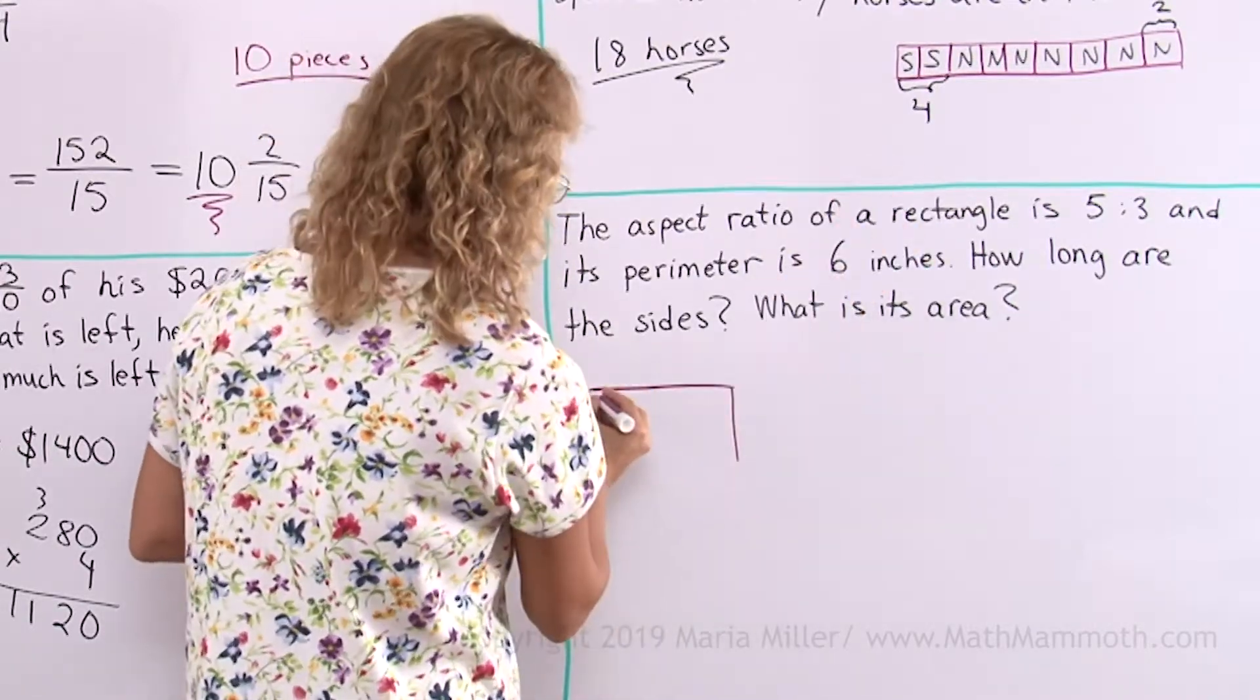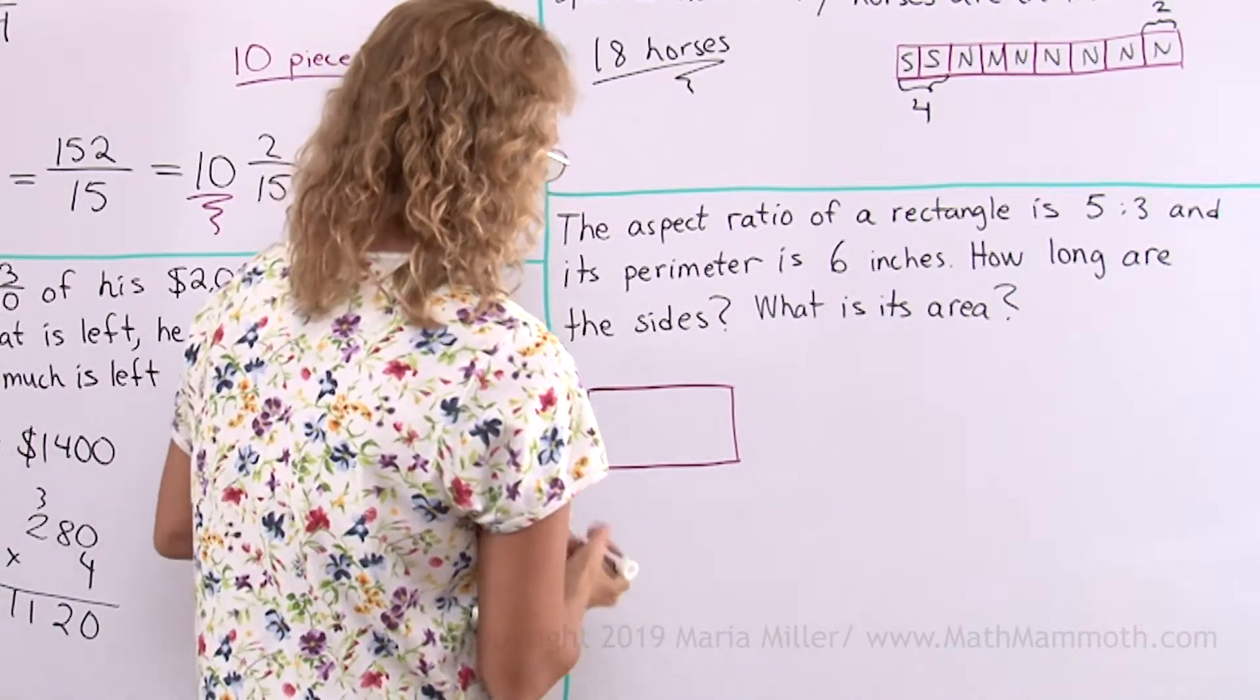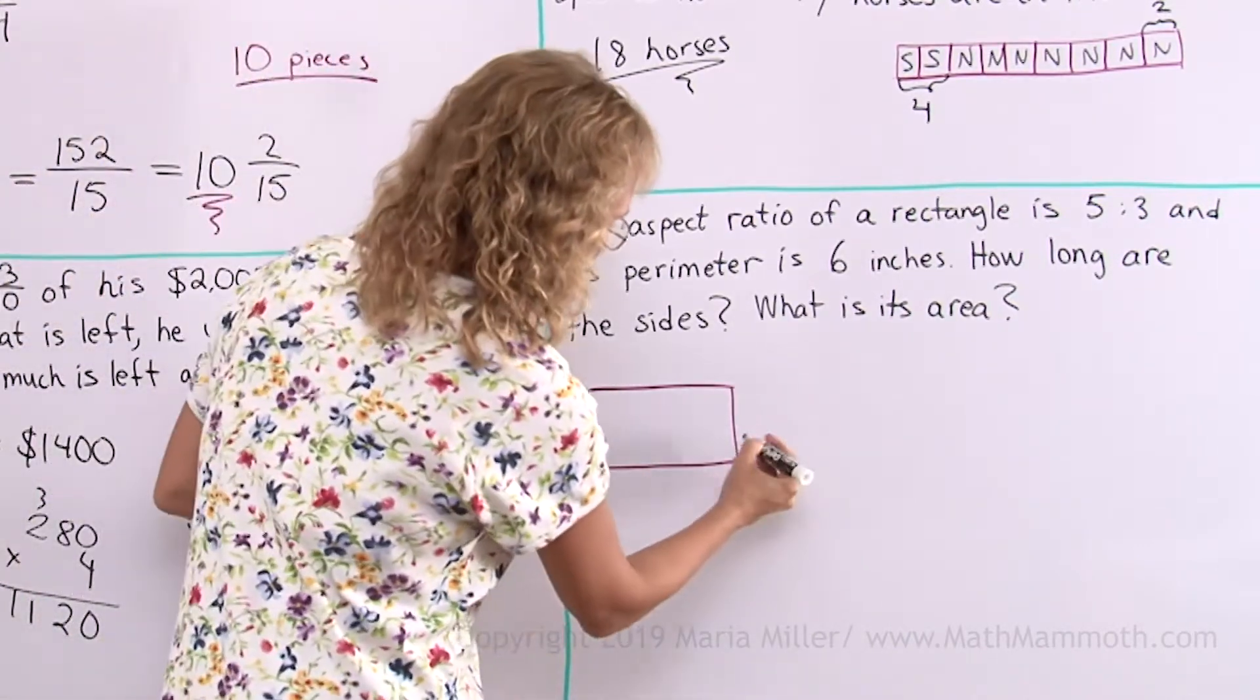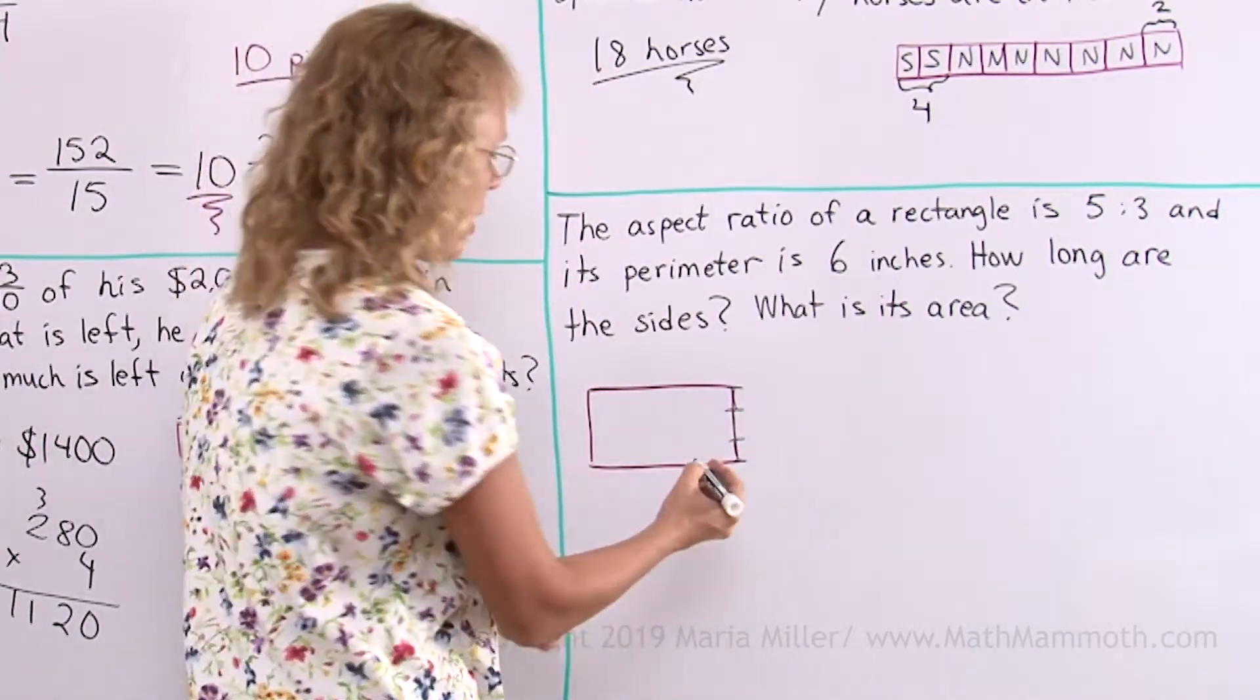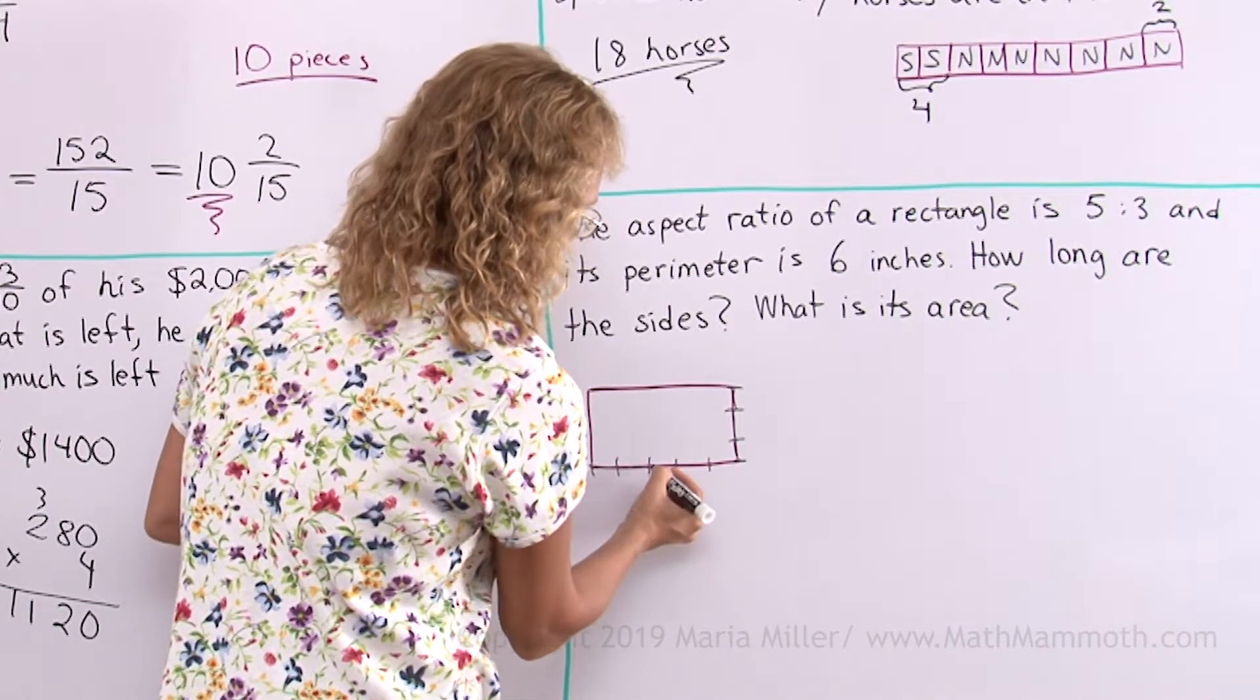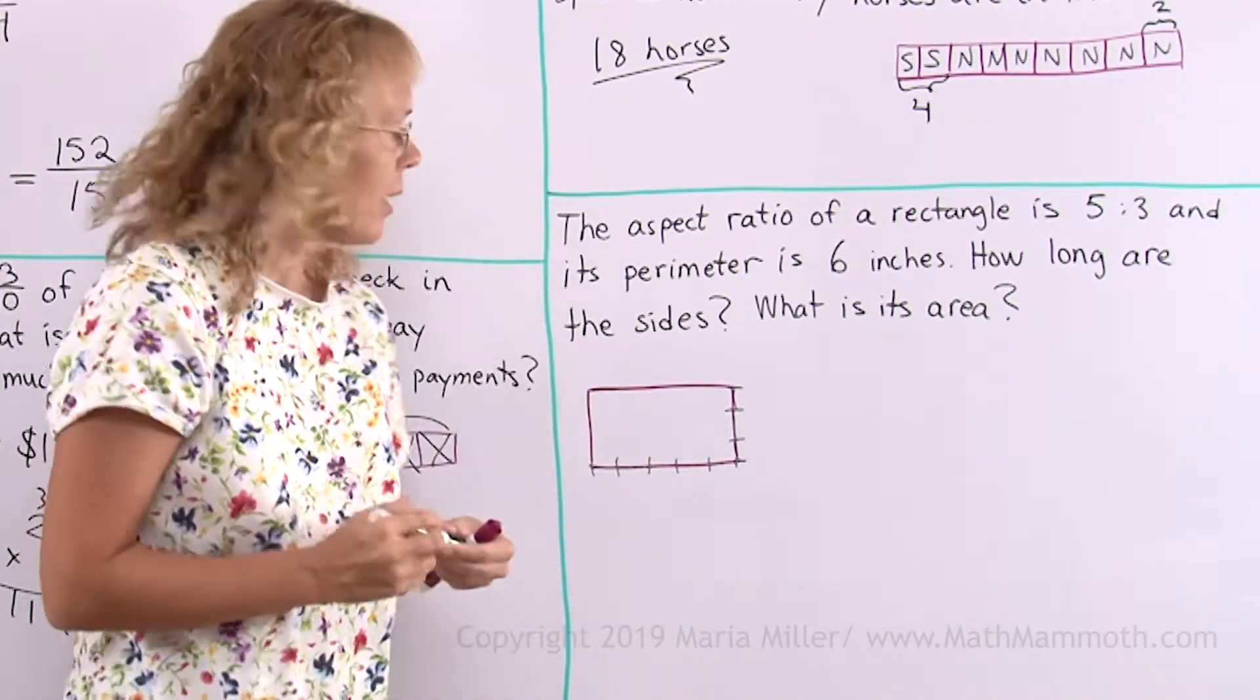Now this is 5 to 3, so I should draw this longer than that. And the aspect ratio, I can mark it here by thinking of here being like 3 units. That side is 3 units versus this side is 5 units. 1, 2, 3, 4, 5 units, 3 units.